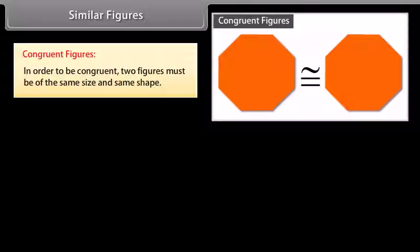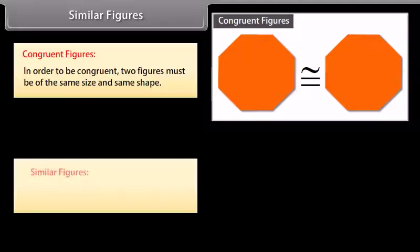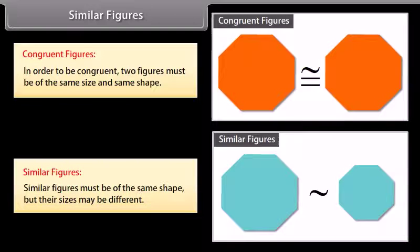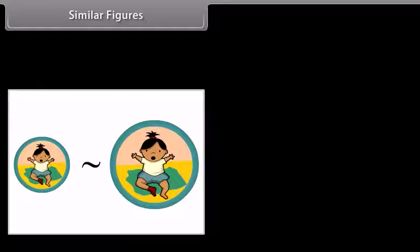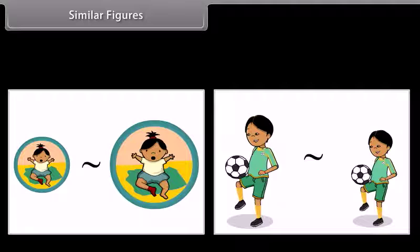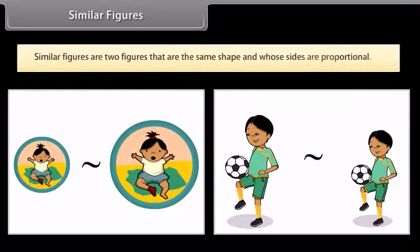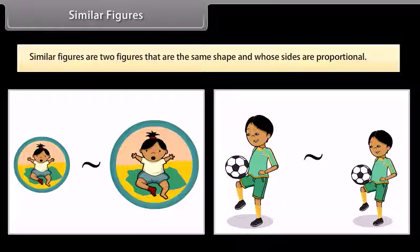Congruent figures must be of the same size and same shape. Similar figures must be of the same shape, but their sizes may be different. This is the symbol that means similar. When you have a photograph enlarged, you make a similar photograph. A photograph can also be shrunk to produce a slide. So, similar figures are two figures that are the same shape and whose sides are proportional.